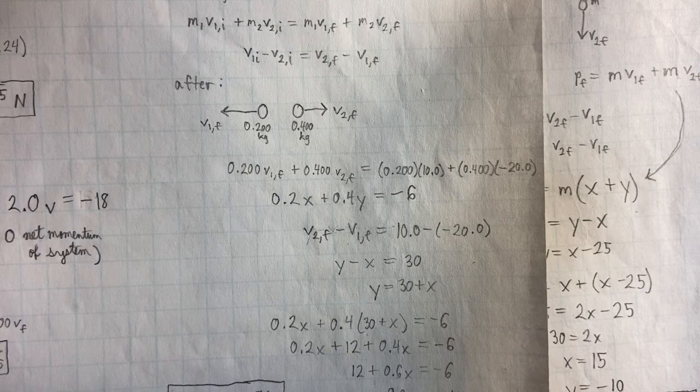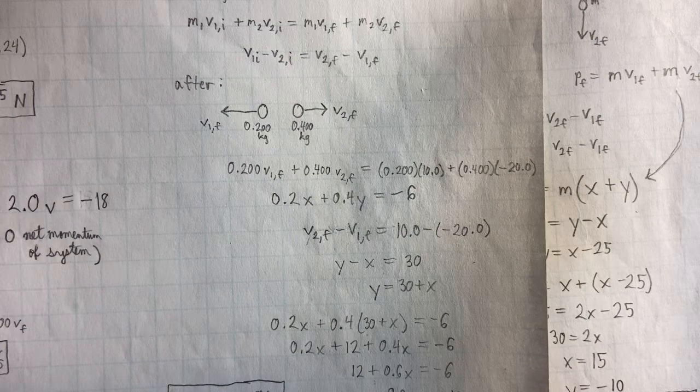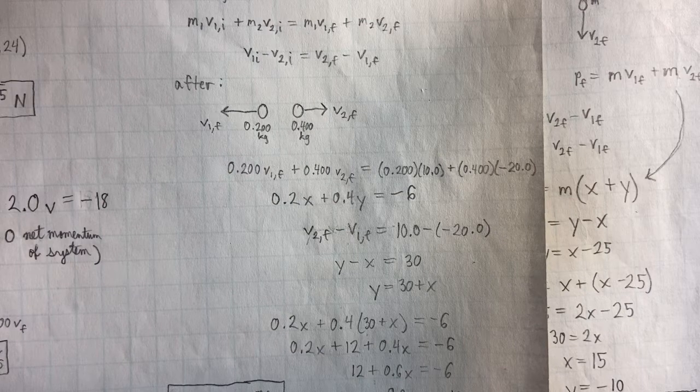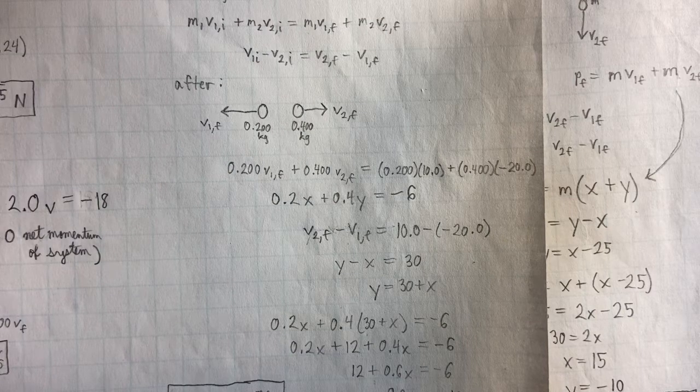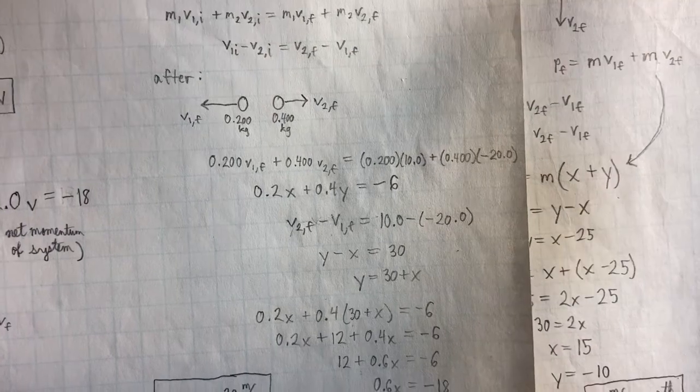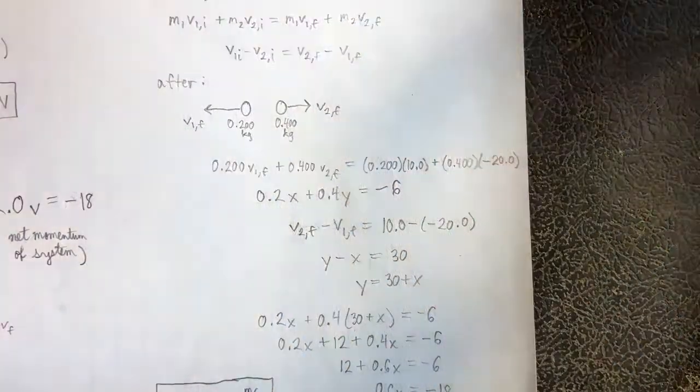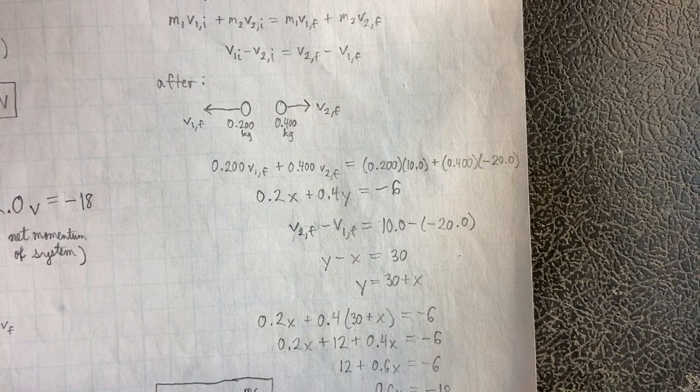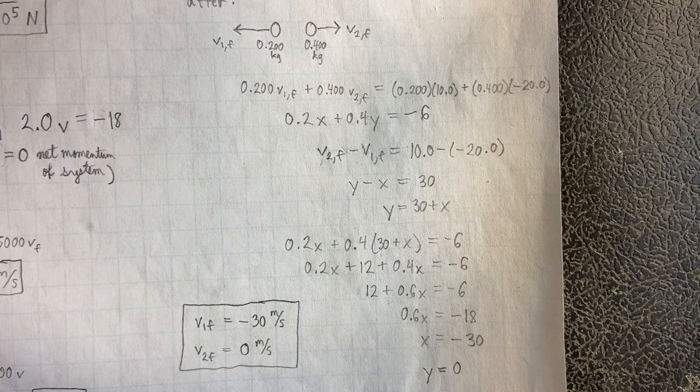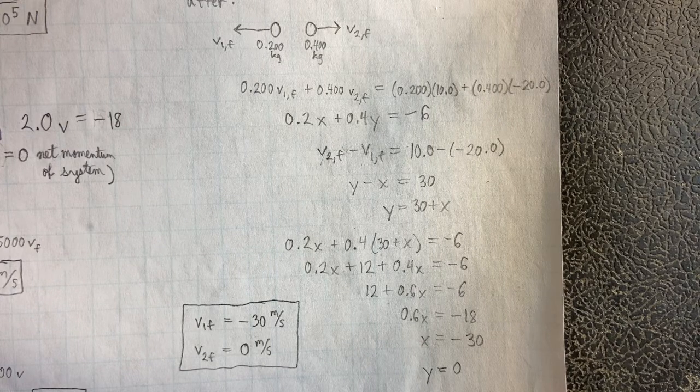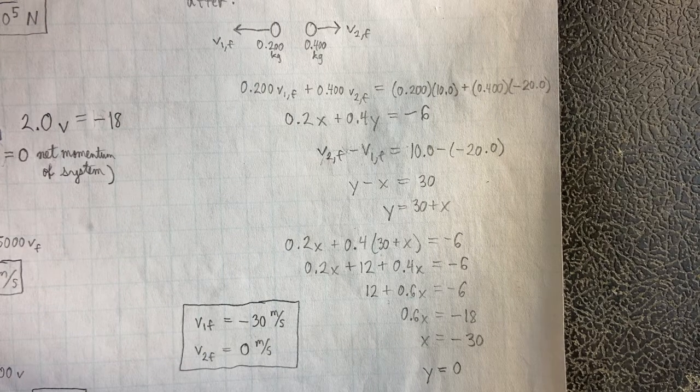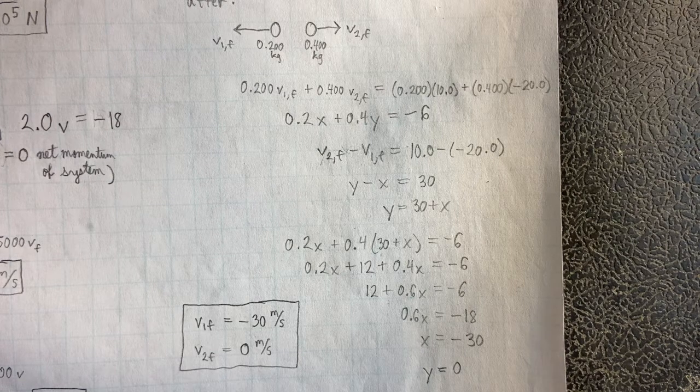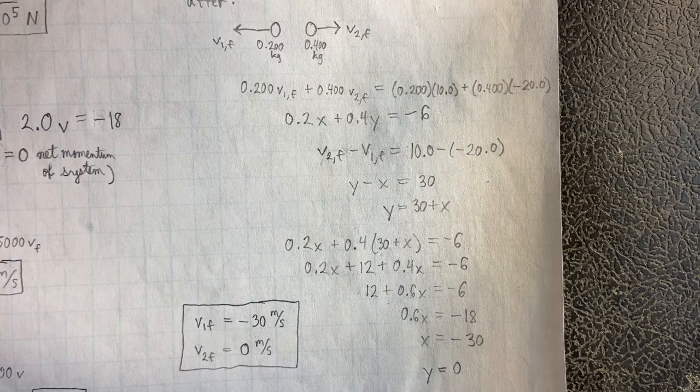For convenience, we're going to call V1F X and we're going to call V2F Y. And so this is the system. Let me just remove that back page because that might be confusing. All right, so this is the system that we're going to solve. And when we continue with the algebra and arithmetic, we end up getting that Y equals zero and X equals negative 30. Therefore, V1F is negative 30 meters per second and V2F is zero meters per second.